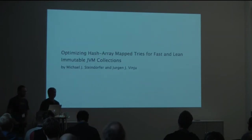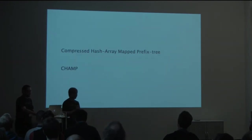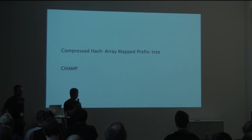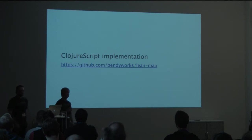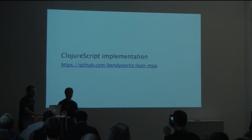And so the implementation that we'll talk about today was presented in a paper by Michael Steindorfer and Juergen Vinju. And this paper is titled Optimizing Hash Array Mapped Tries for Fast and Lean Immutable Java Virtual Machine Collections. And that's kind of a mouthful to say. So we're using the acronym that they've presented, CHAMP. Compressed Hash Array Mapped Trie or CHAMP, which is much shorter than that mouthful of the paper title. And today we're going to be presenting a ClojureScript implementation of CHAMP that you can find on GitHub under BendyWorks repositories, under the LeanMap repository if you're interested.